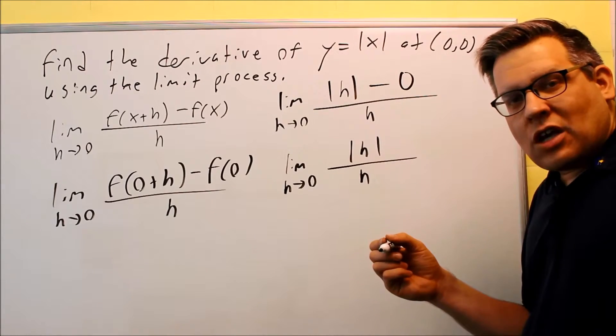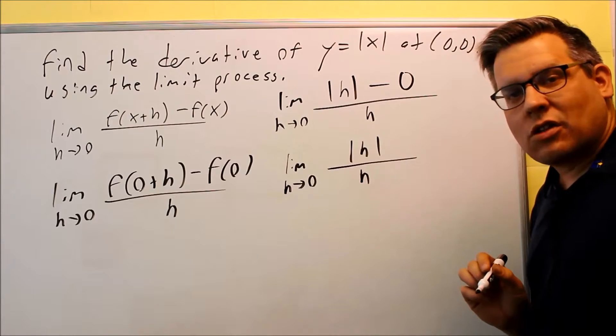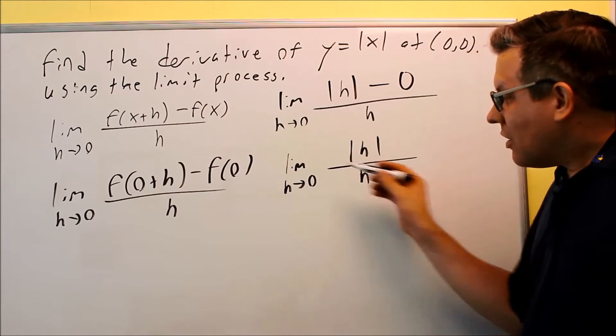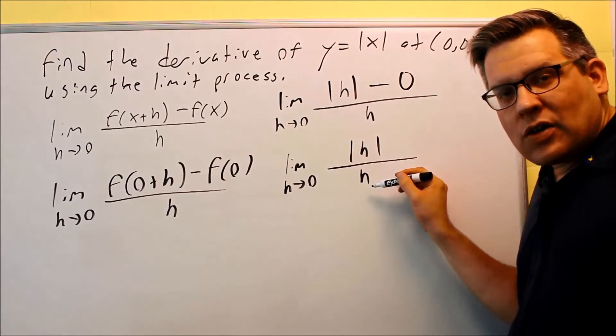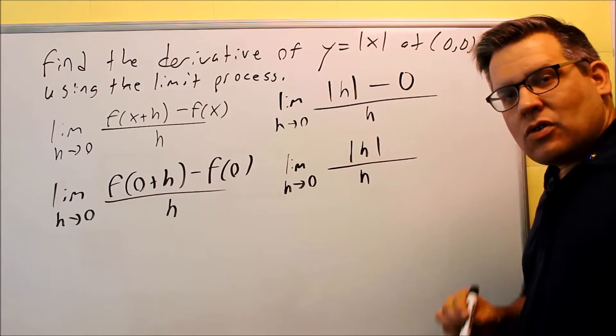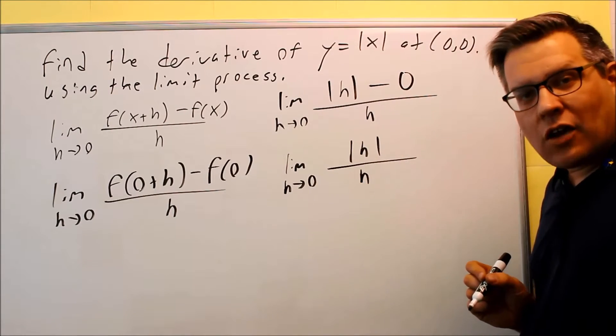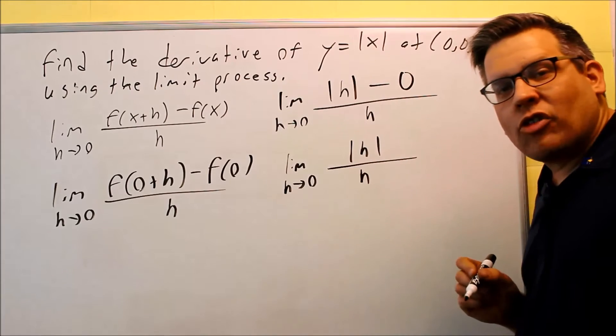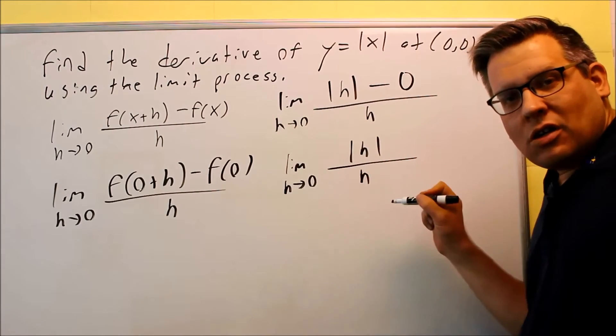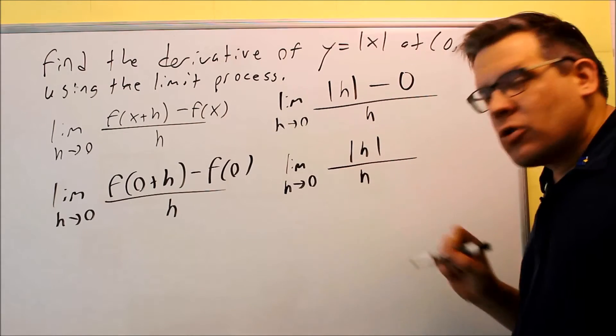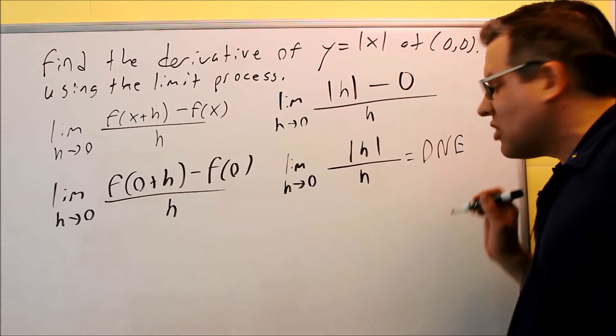Now, if I check the limit as h approaches 0 from the right-hand side, that means I'm putting in a number that's slightly larger than 0. That would be a positive number. This is always positive, and then that means this bottom one will be positive, so the whole thing is positive. So the result is, if I approach 0 from the left, I get a negative number. If I approach 0 from the right, I get a positive number. Well, then that means that I'm approaching two different y values as I approach 0, which means that that limit is not going to exist.